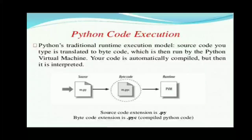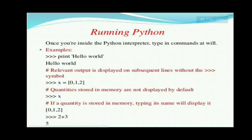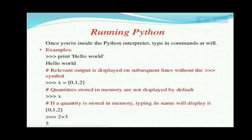Python code execution: you write a source file, that file gets interpreted and becomes byte code, and then the runtime is the PVM (Python Virtual Machine) which runs on a virtual machine. When running Python, once inside the interpreter you type commands directly — for example, print('hello world') prints hello world, x = [0, 1, 2] creates a list and printing x gives 0 1 2, and 2 + 3 automatically gives 5. That concludes our introduction to Python — many of these points are also covered in chapter 2 of your textbook.